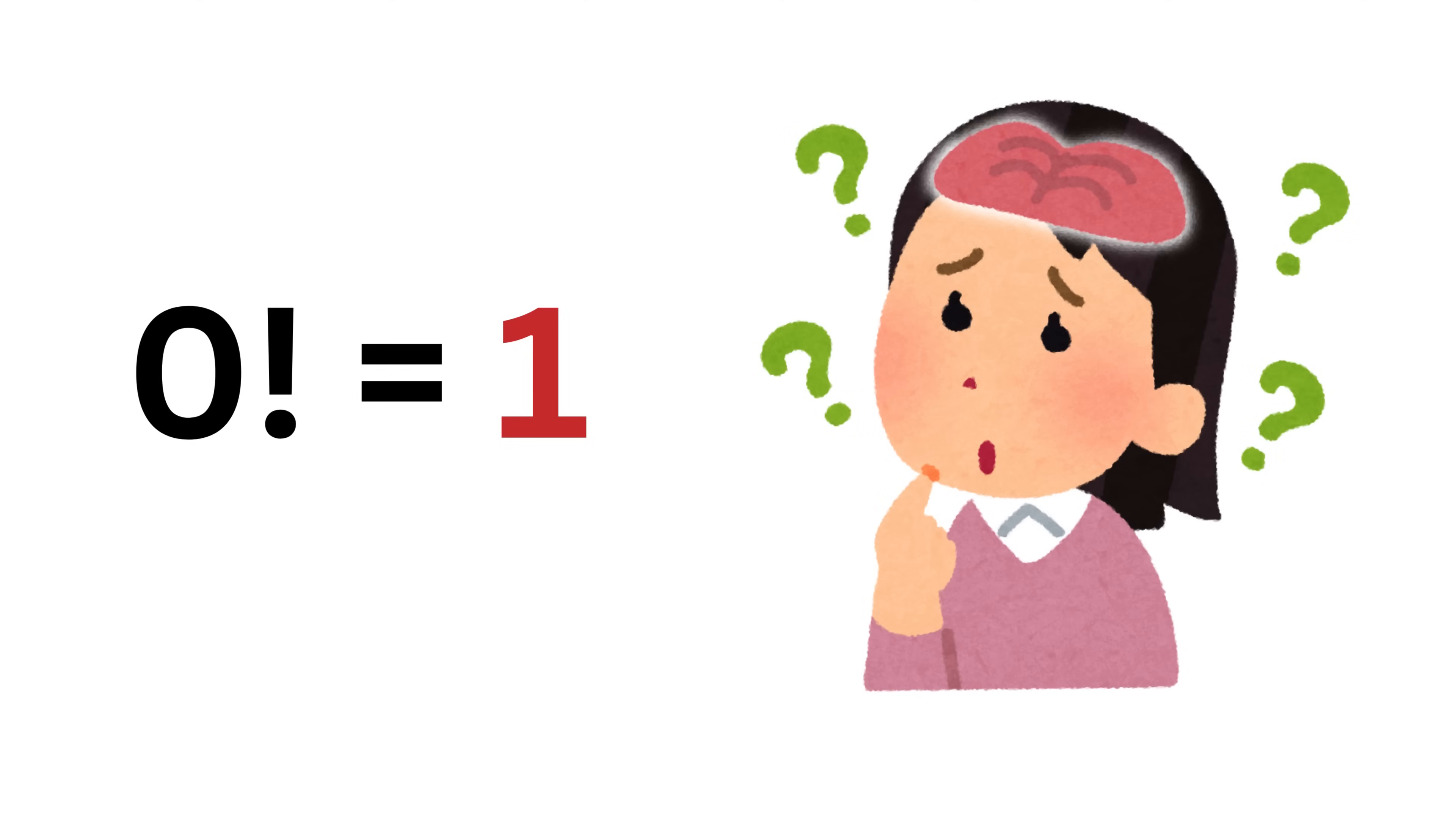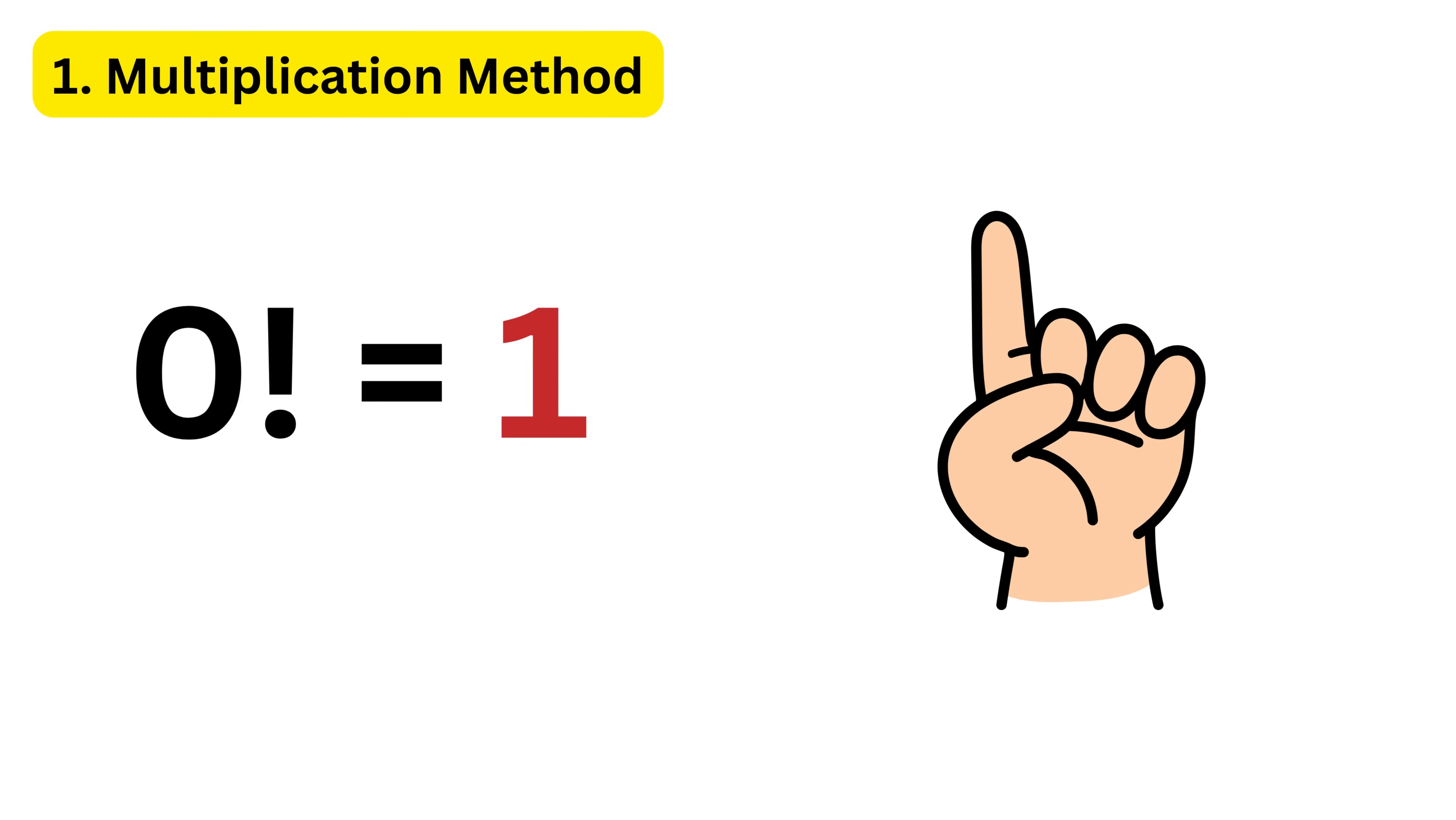Zero factorial equals one never made any sense until now. First way to understand this is through the multiplication method.